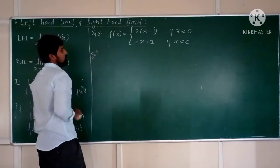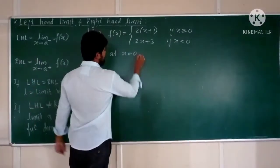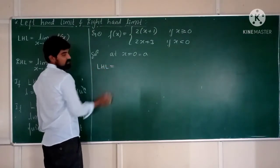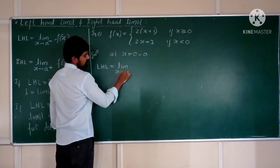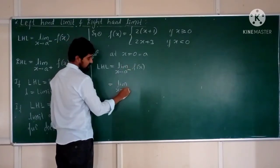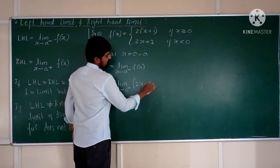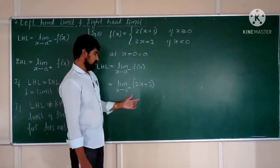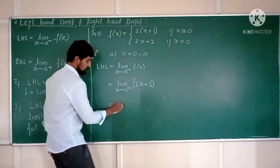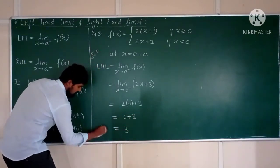We are finding the limit value at x = 0, so the value of A is 0. Since the function is defined in two manners, we need to find LHL and RHL. The definition of LHL is limit x tends to 0 minus. Zero minus means x is less than 0, so the definition of F(x) is 2x+3. Substituting x = 0: 2(0)+3 = 0+3 = 3. Hence, the value of LHL is 3.